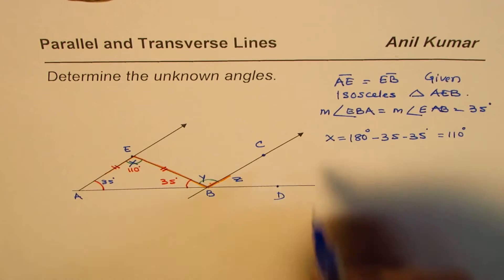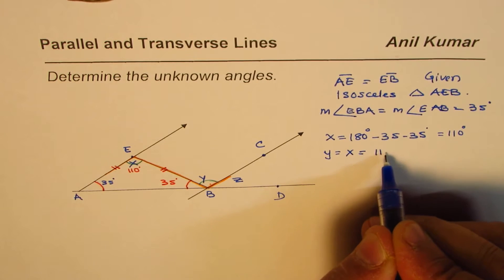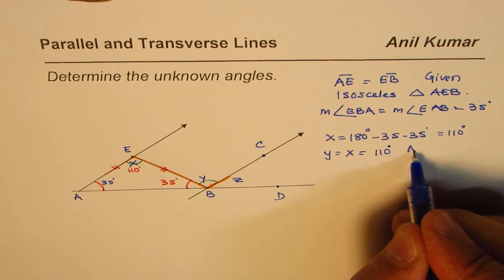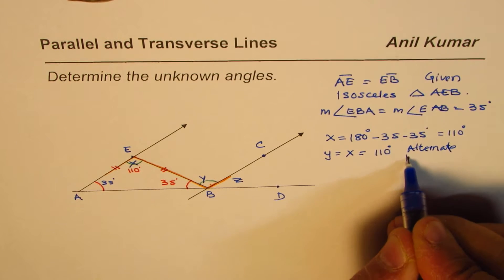They should be equal. So y is equals to x, so that should be equals to 110 degrees. They are alternate interior angles.